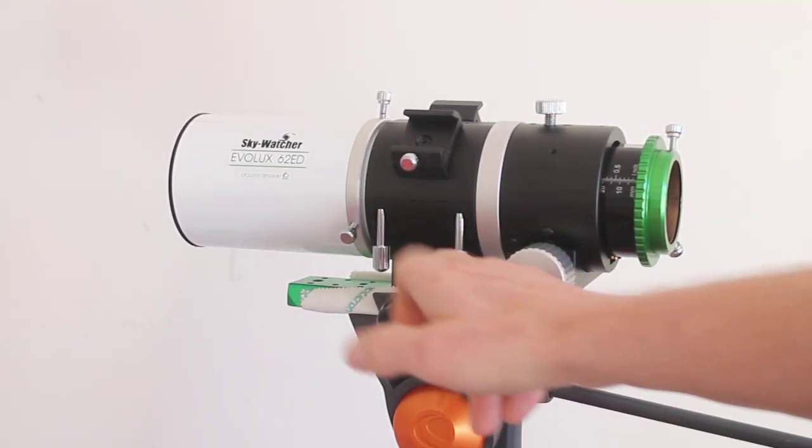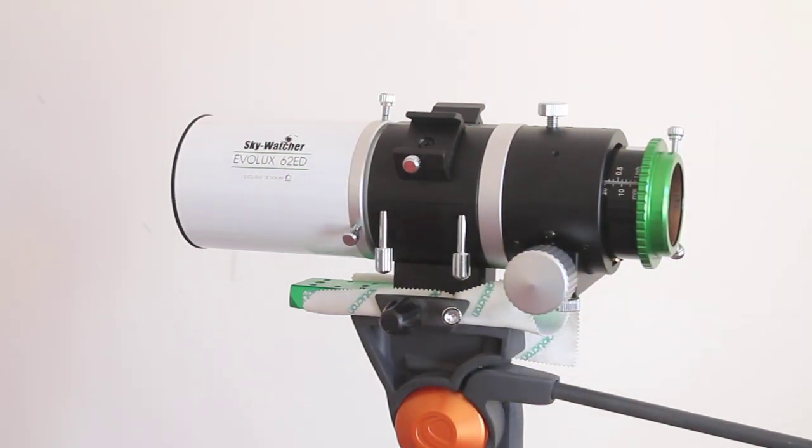Also, you'll notice it comes with a standard Sky Watcher dovetail bar, so it will go on to most EQ mounts. If you want to put it on a piggyback on top of another scope, bear in mind this weighs two and a half kilograms plus the OTA, whichever scope you are using. So have a very suitable and sturdy mount.